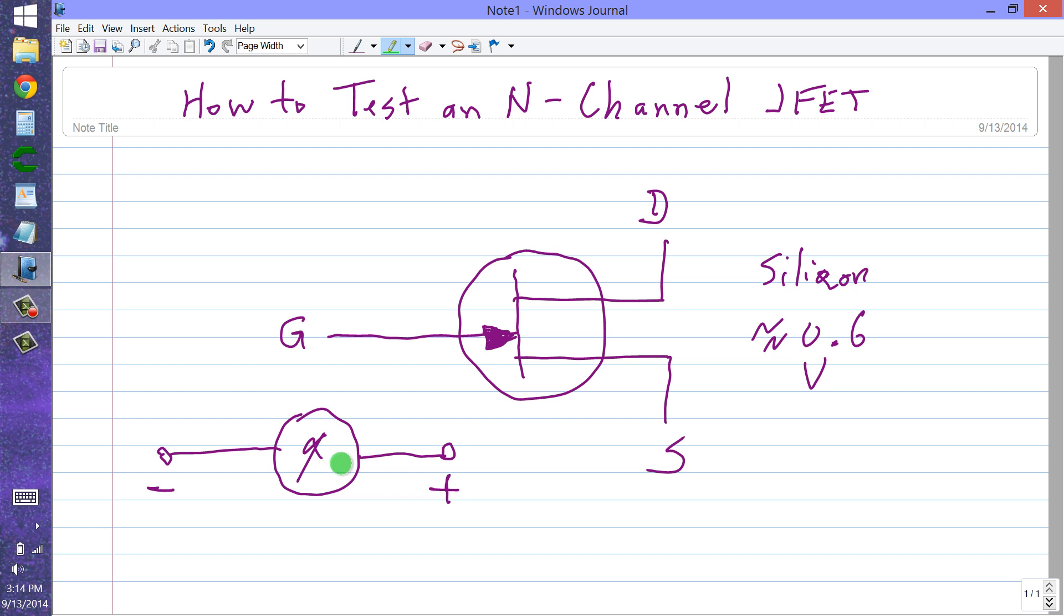You need to be certain which lead of your ohmmeter produces the positive electricity and which lead produces the negative. In my case, the red lead has a negative polarity, a negative voltage, and the black lead has a positive voltage. So electrons will emerge from here and enter here. Electron current flows from minus to plus, and that's the kind of current we'll talk about here.